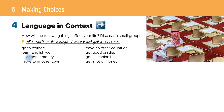When talking about causes and effects, we can use if conditional sentences. Let's take a look at the vocabulary: go to college, learn English well, save some money, move to another town, travel to other countries, get good grades, get a scholarship, get a lot of money.